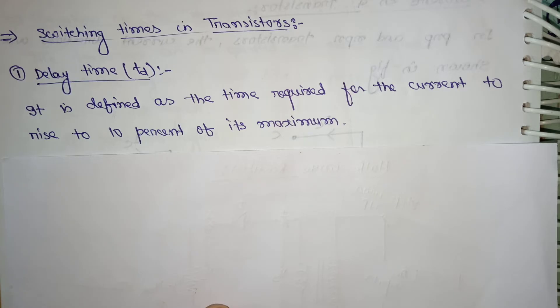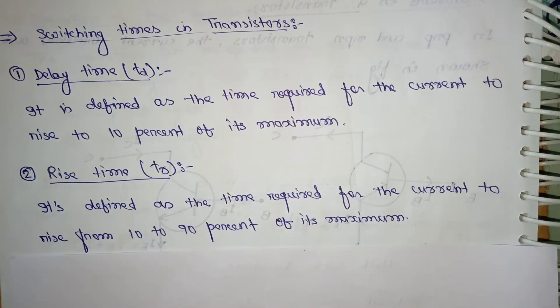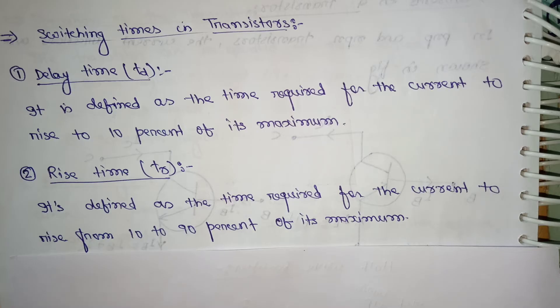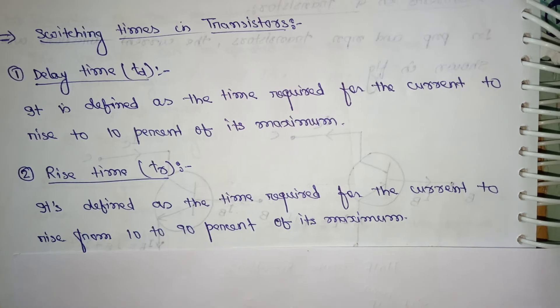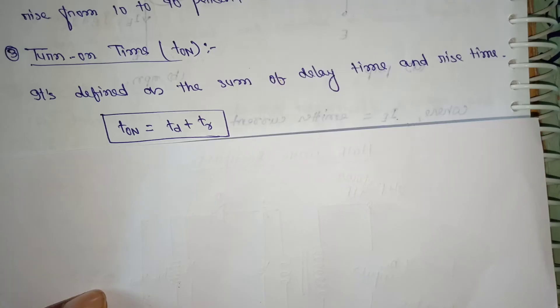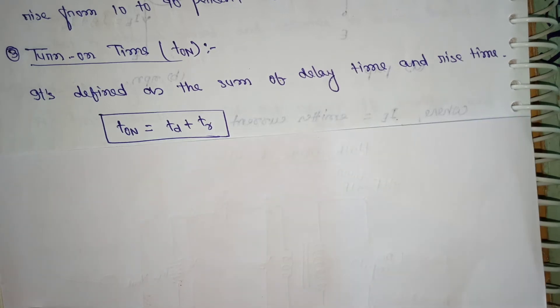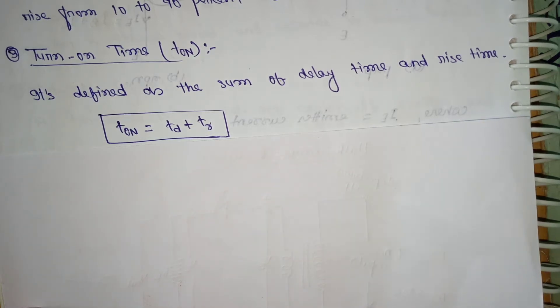Next is the definition of rise time. It is defined as the time required for the current to rise from 10 to 90 percent of its maximum. Next, turn-on time. It is defined as the sum of delay time and the rise time. t_on is equal to t_d plus t_r.